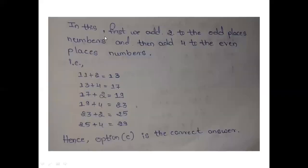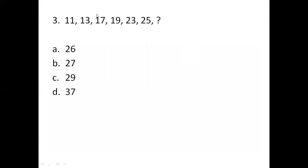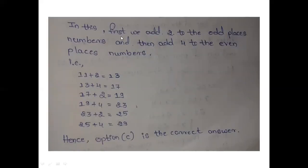First we add 2 to the odd places numbers and then add 4 to the even places numbers. That is 11, 17, 23, and question mark are odd places. And 13, 19, 25 are even number places. That is 11 plus 2 equals to 13, 13 plus 4 equals to 17, 17 plus 2 equals to 19, 19 plus 4 equals to 23, 23 plus 2 equals to 25, 25 plus 4 equals to 29.